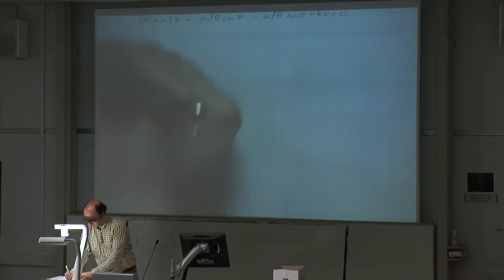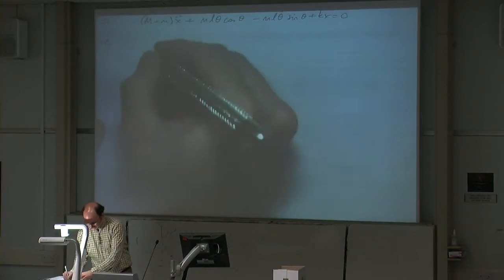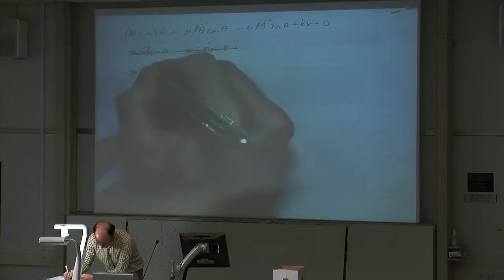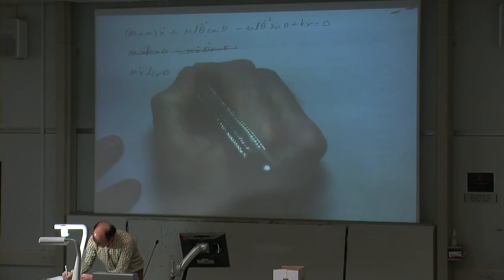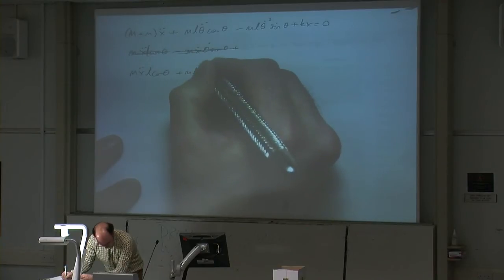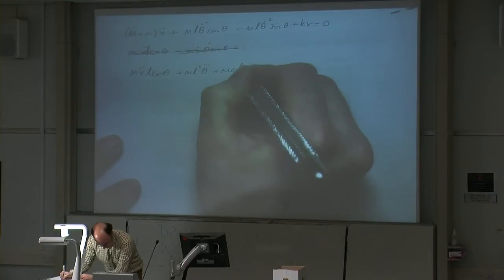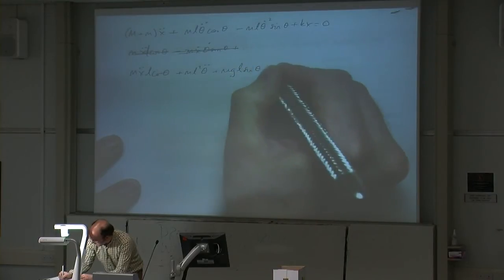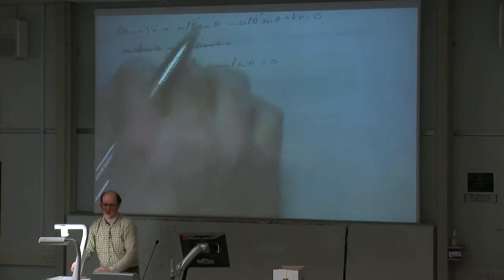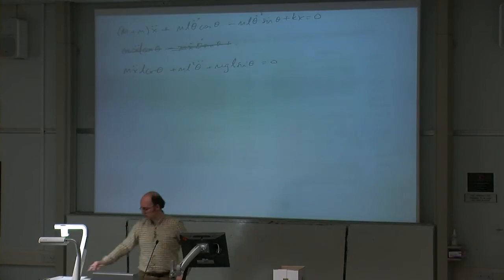And then for the other equation, we had mẌLcos(θ) + ML²θ̈ + MGLsin(θ) = 0. So those are the two equations we had last week at the end of question 20.